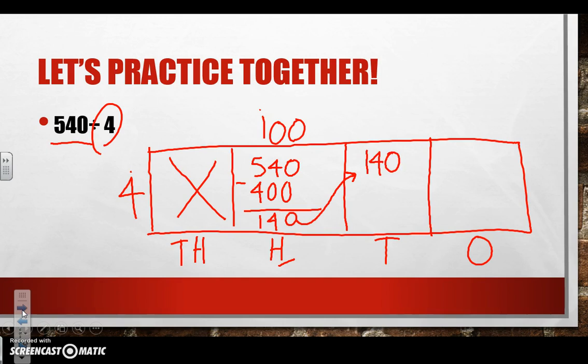We're going to ask ourselves, okay, how many times can 4 go into 14? 4 can go into 14 three times without going over. So we're writing a 3. But remember because it's in the tens place we have to add a zero on the end.